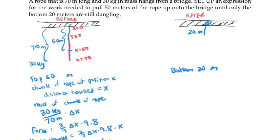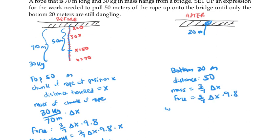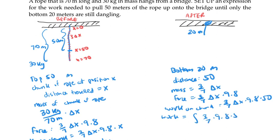Now let's look at the bottom 20 meters. Any chunk in that piece is going to go straight up by 50 meters, so its distance is fixed at 50. Its mass of a little chunk of rope in that part is still (3/7) delta x, and the force is still (3/7) delta x times 9.8. So the work on that little chunk is (3/7) delta x times 9.8 times 50. The total work on that bottom 20 meters is the integral of (3/7) times 9.8 times 50 dx, with bounds from x equals 50 to x equals 70.